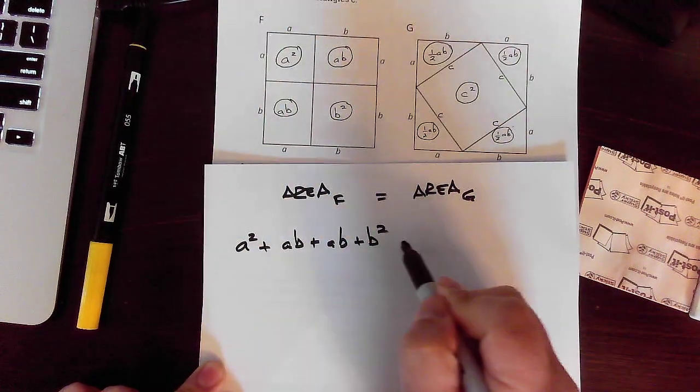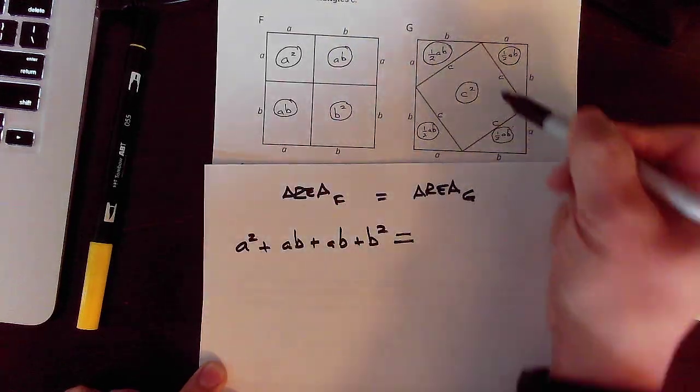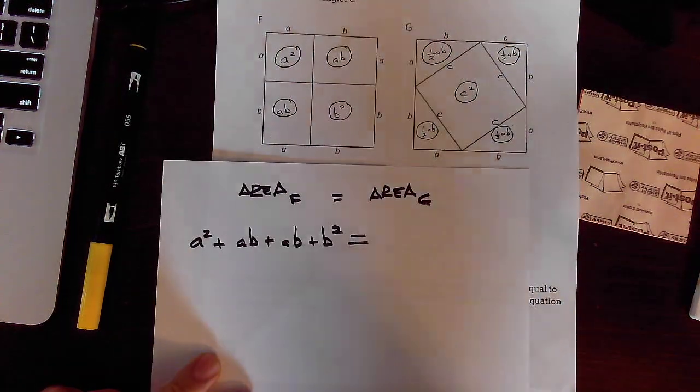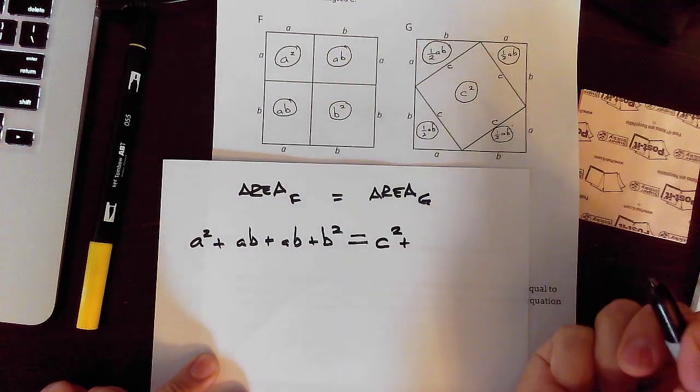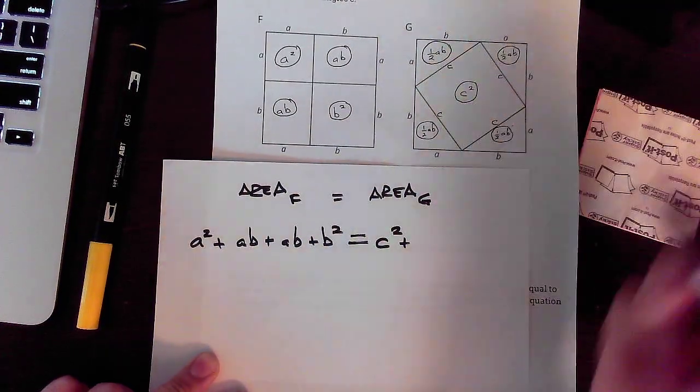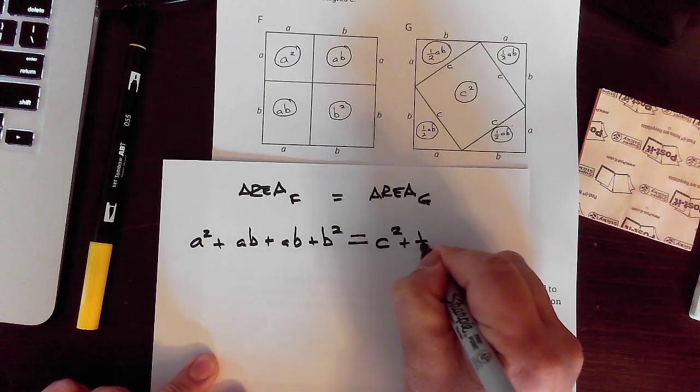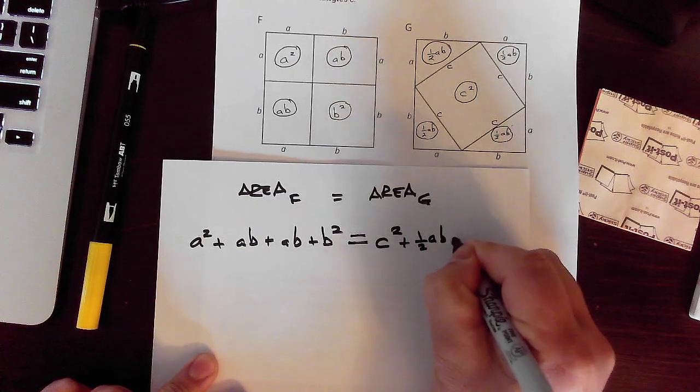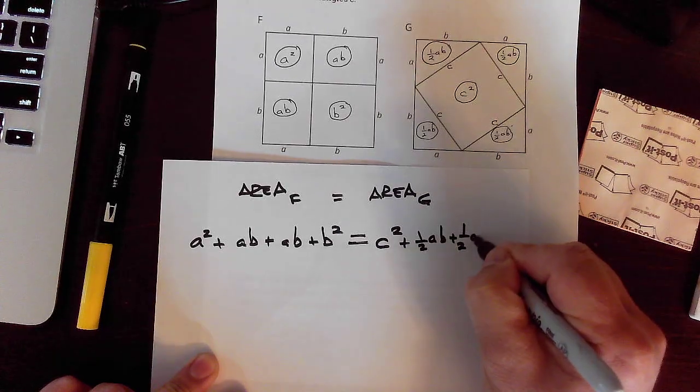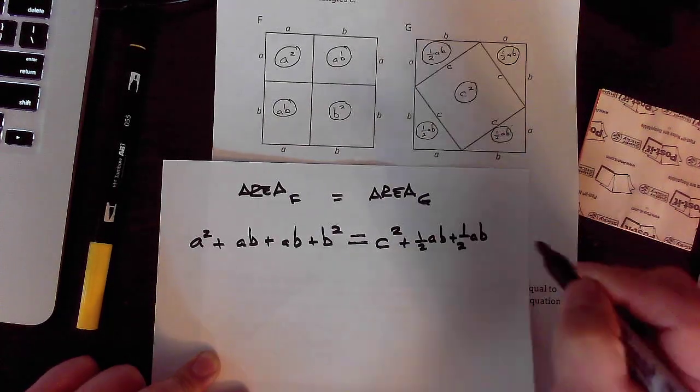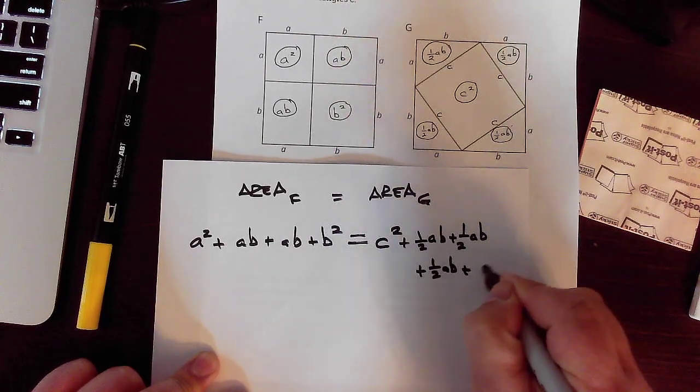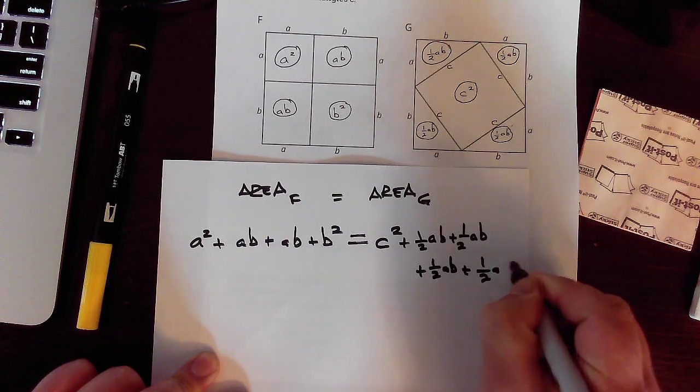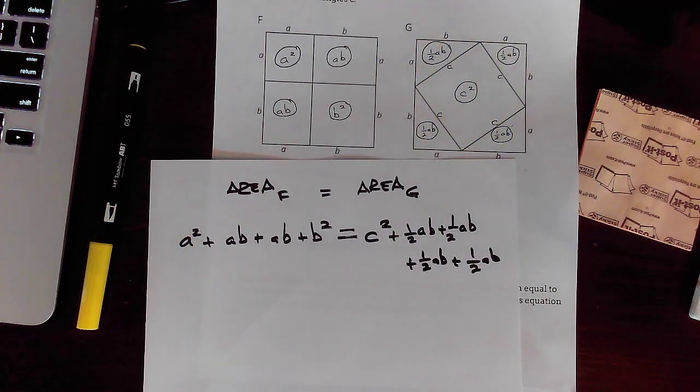Now that's all of area F and all of that is equal to everything in area G. And I've got C squared. The middle one. And I am going to be boring and write all four of those little ones separately. One half AB. Oh man. I'm going to run out of room, aren't I? Damn it. That's what I get for using the fat marker. That is ugly. But we're going to clean it up right now.